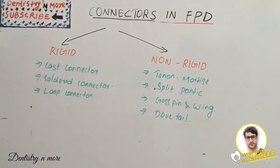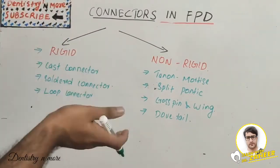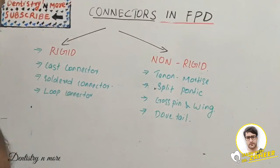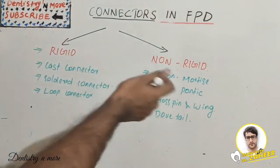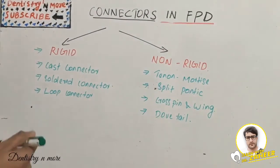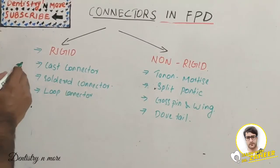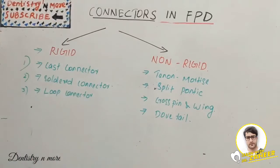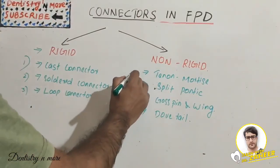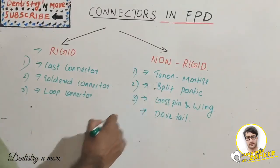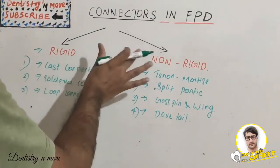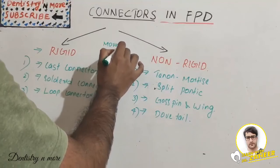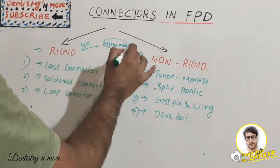The connector connects the pontic and retainer. It can be rigid or non-rigid. In rigid connectors, movement of the parts — that is the pontic and retainer — is not possible. In non-rigid connectors, a little movement of the retainer and pontic is permitted. Rigid connectors have three types: cast connector, soldered connector, and loop connector. Non-rigid connectors include the tenon-mortise connector, split pontic connector, cross pin and wing connector, and dovetail connector.